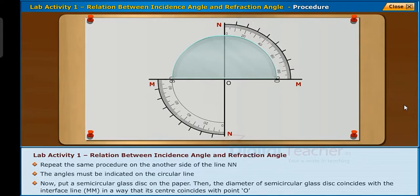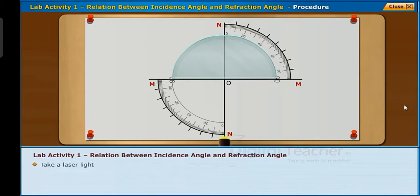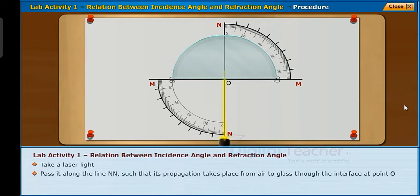Take a laser light and pass it along the line NN such that its propagation takes place from air to glass through the interface at point O.